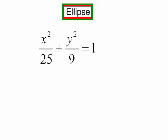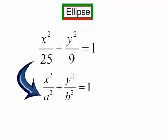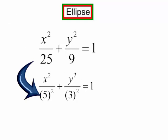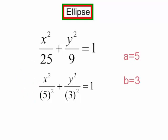So let's look at this ellipse. The larger denominator is under the x-squared term, so my a-squared is 25. I could write 25 is 5-squared and 9 is 3-squared. So a is 5 and b is 3.